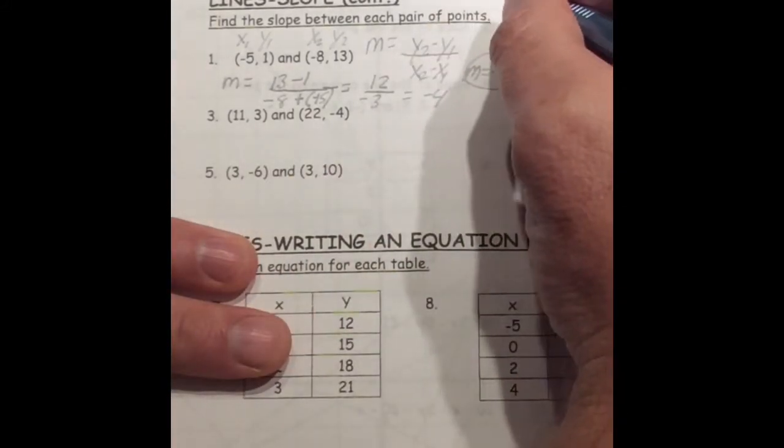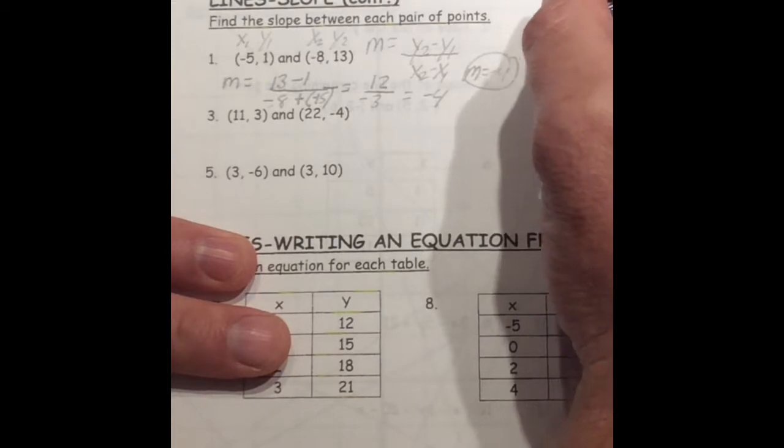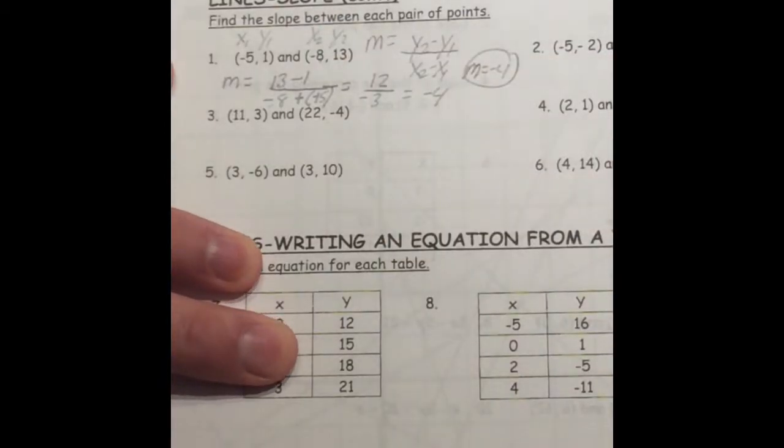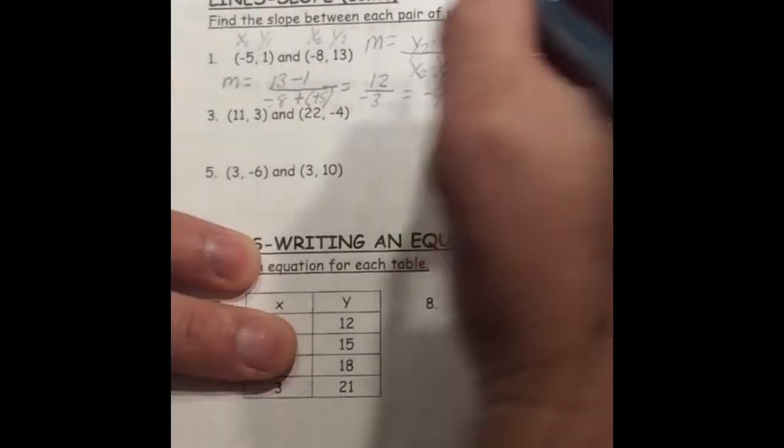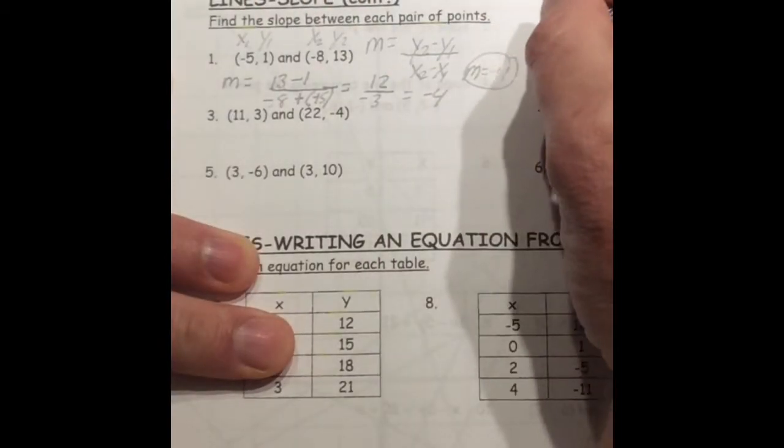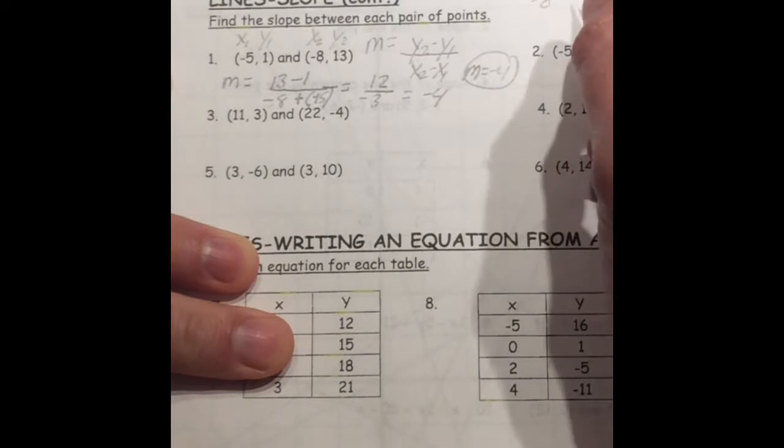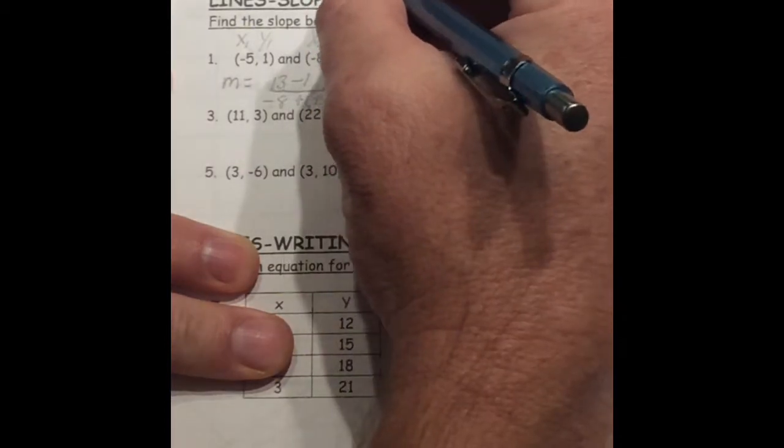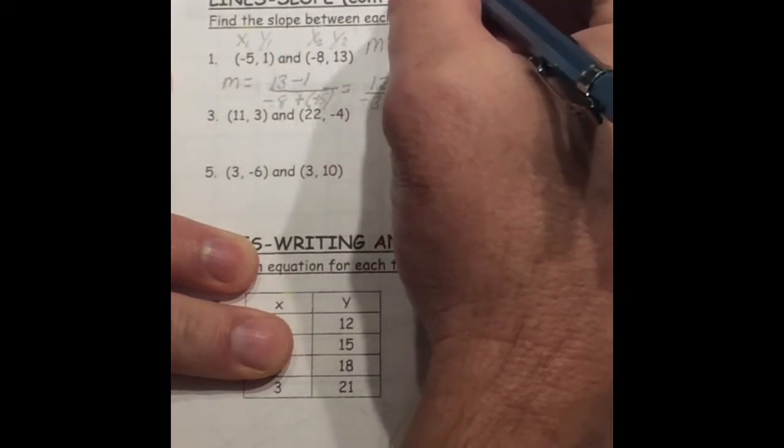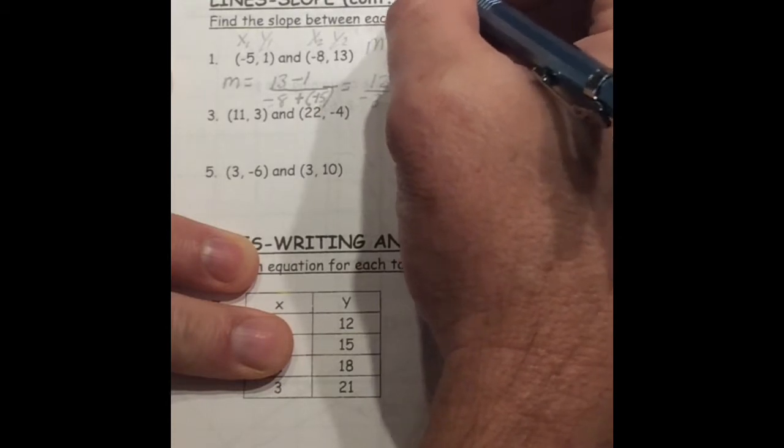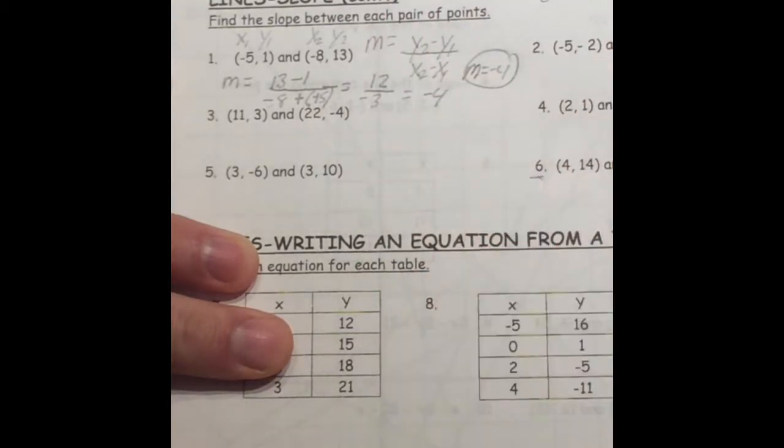So I just want to show you that, remember that undefined. Undefined is a number divided by 0, because you can't divide by 0. And a 0 slope is 0 divided by any number. And you should be able to get to 6 pretty easy right there.